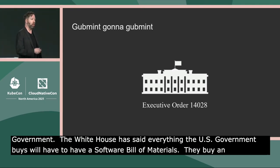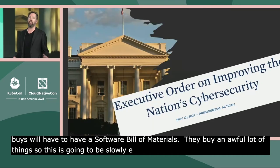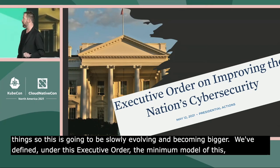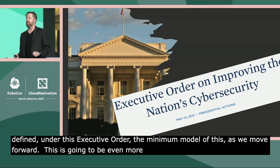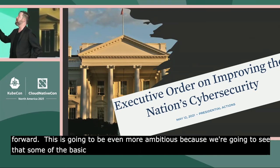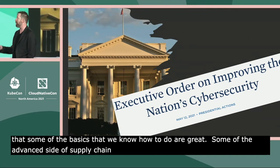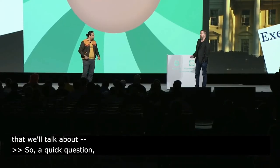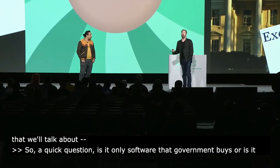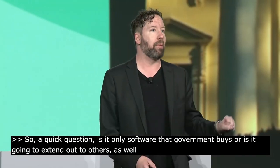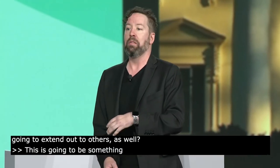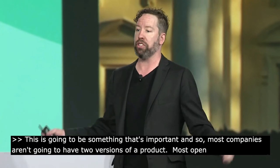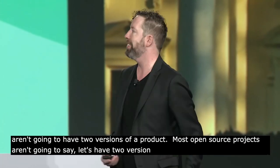Under the executive order, we've defined the minimum model as we move forward, and this is going to become even more ambitious. Is it only software the government buys, or will this extend further? The joy of policy is that most companies aren't going to have two versions of a product — most open source projects aren't going to have one version that cares about supply chain and one that doesn't.